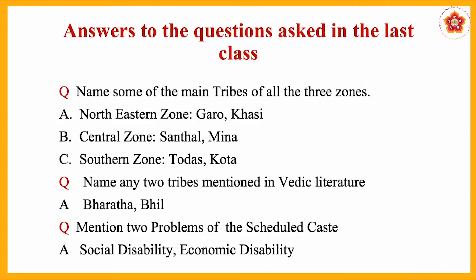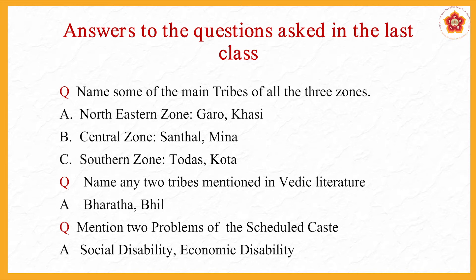The first question was: name some of the main tribes of all 3 zones. In the north-eastern zone we have Garo and Khasi; from the central zone, Santhal and Meena; from the southern zone, Toda and Kota. The next question was: name any 2 tribes mentioned in Vedic literature. The answer is Bharata and Bheel — there are some others also, please go through that.